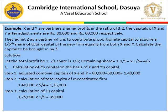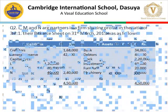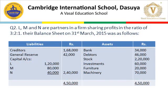We have learned about the calculation of capital of new partner on the basis of old partners' capital. Now we do question number 89 from T.S. Grewal's book, based on the concept where the incoming partner is required to bring proportionate capital on the basis of old partners' capital. L, M and N are partners sharing profits in ratio 3:2:1. The balance sheet on 31st March 2015 is given.